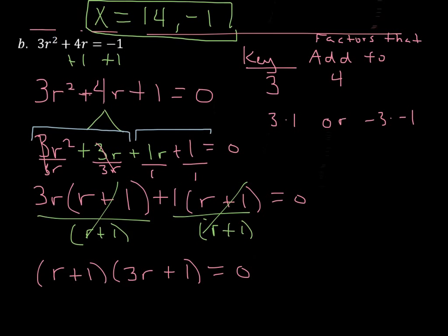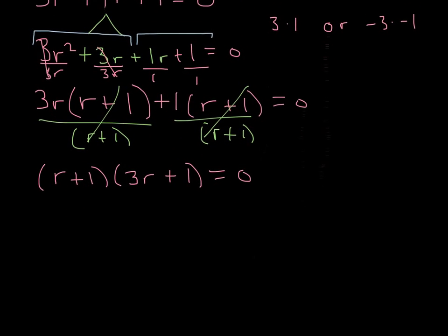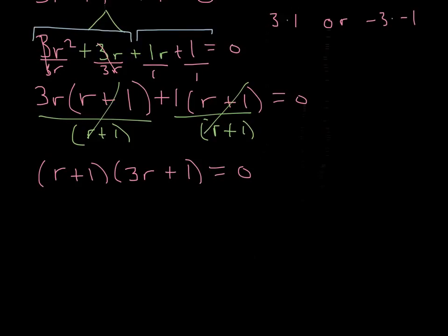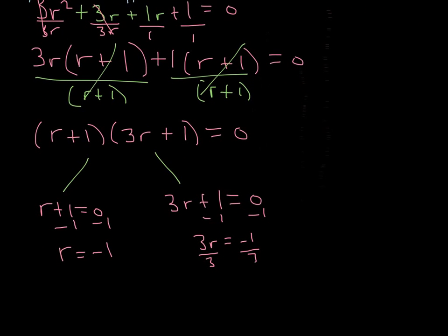Now that we got the factors, we're going to again use that principle of 0 products. And we are now just going to set each of these equal to 0. So we're going to get r plus 1 equals 0 and 3r plus 1 equals 0. And we're going to solve these separately. Minus 1, minus 1. We get r is equal to negative 1. Here we minus 1, minus 1. We get 3r equals negative 1. Divide by 3, divide by 3. And we get r is equal to negative 1 third. So our answers are going to be r is equal to negative 1 and negative 1 third.